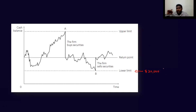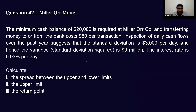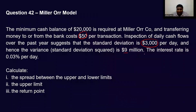The minimum we should have is 20,000. The return point is where we try to maintain the cash balance. They have given: transaction cost is $50, standard deviation of cash flow is 3,000 per day — hence the variance is 9 million — and the interest rate is 0.03% per day.